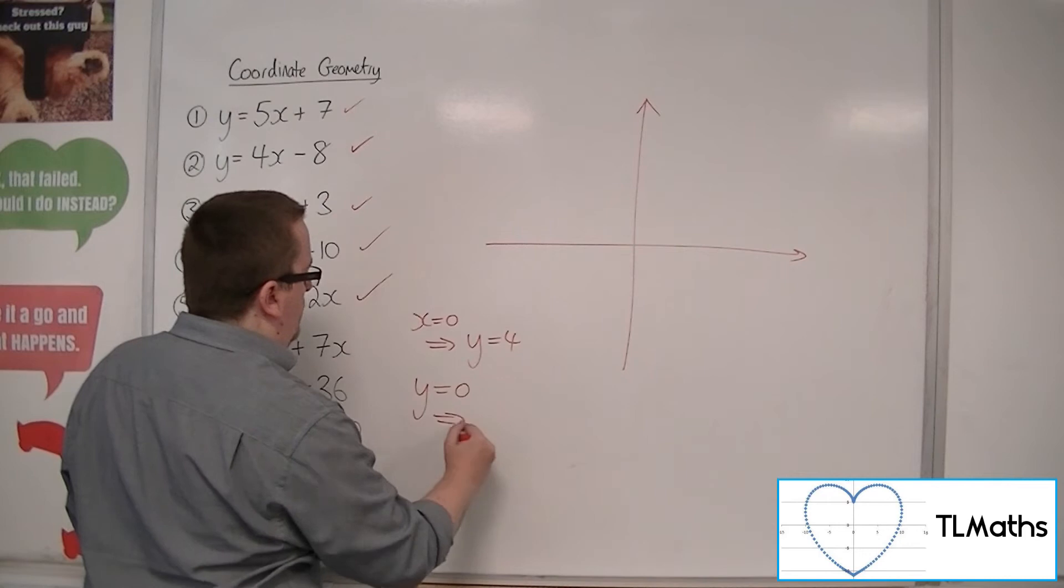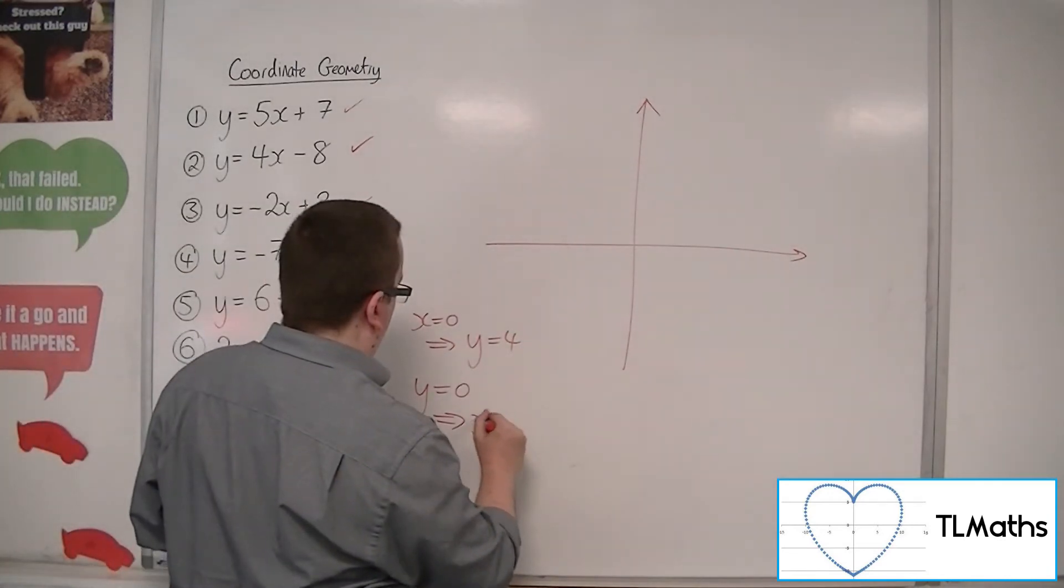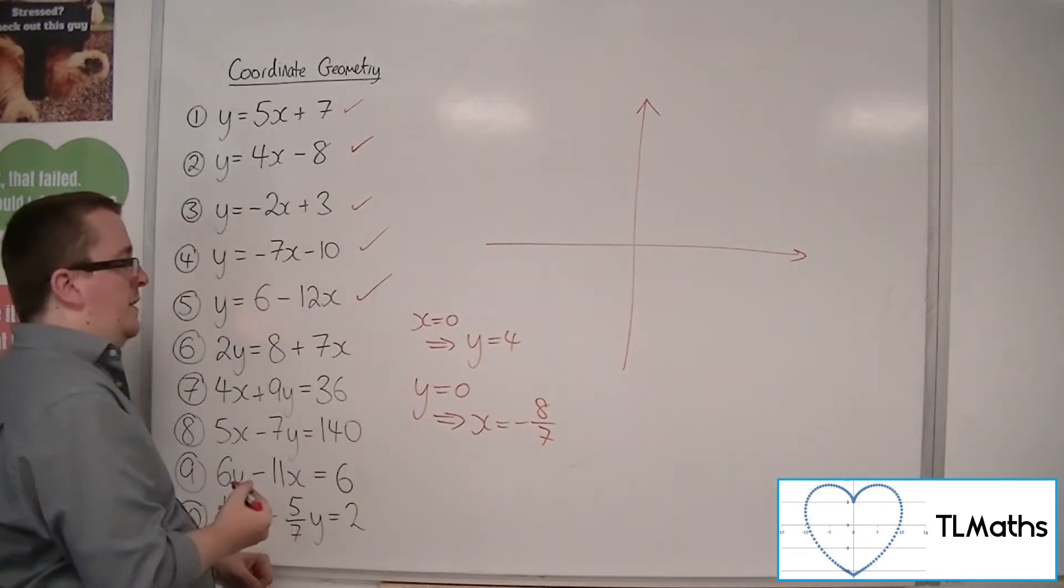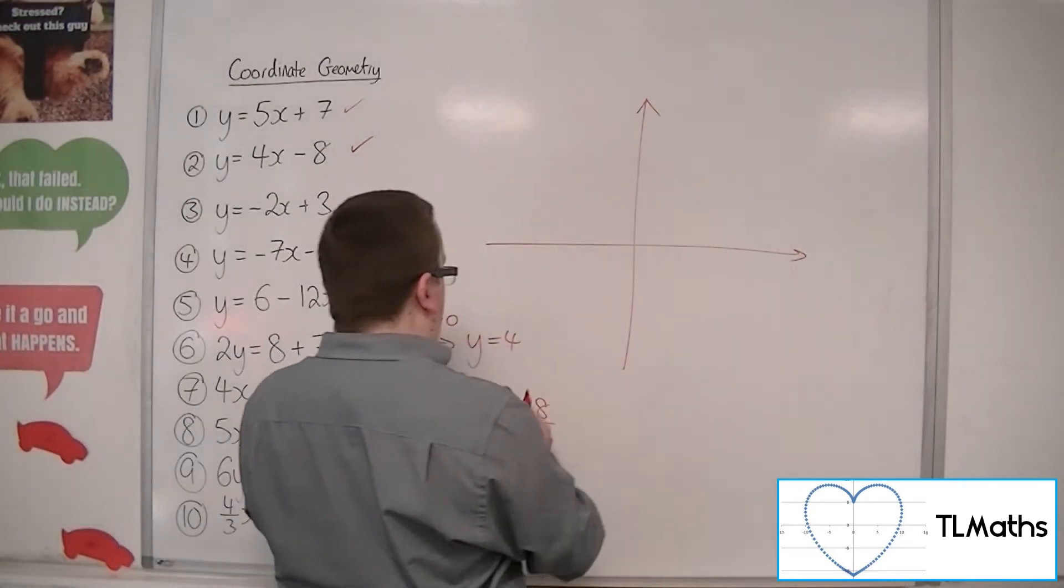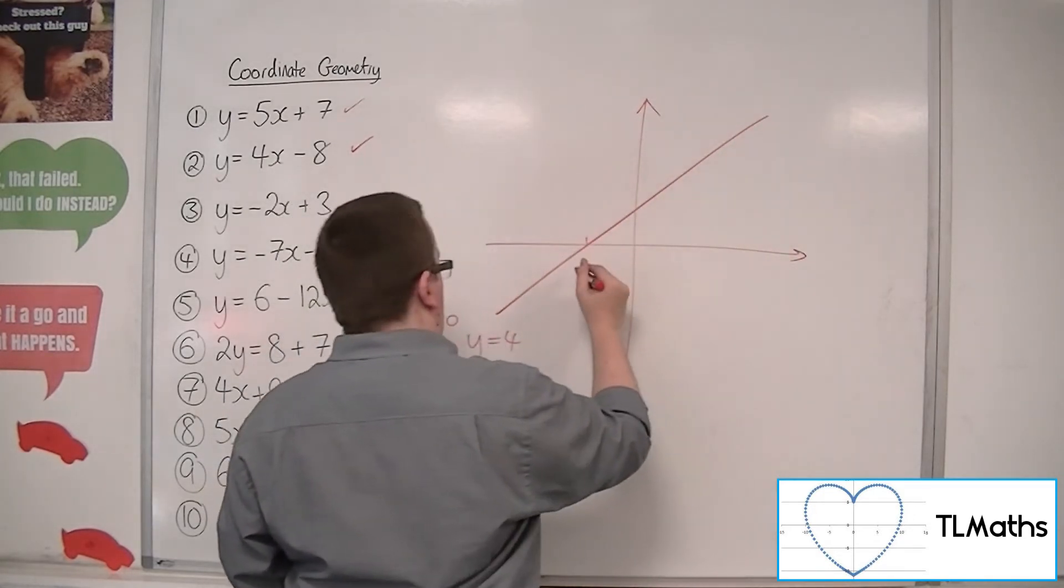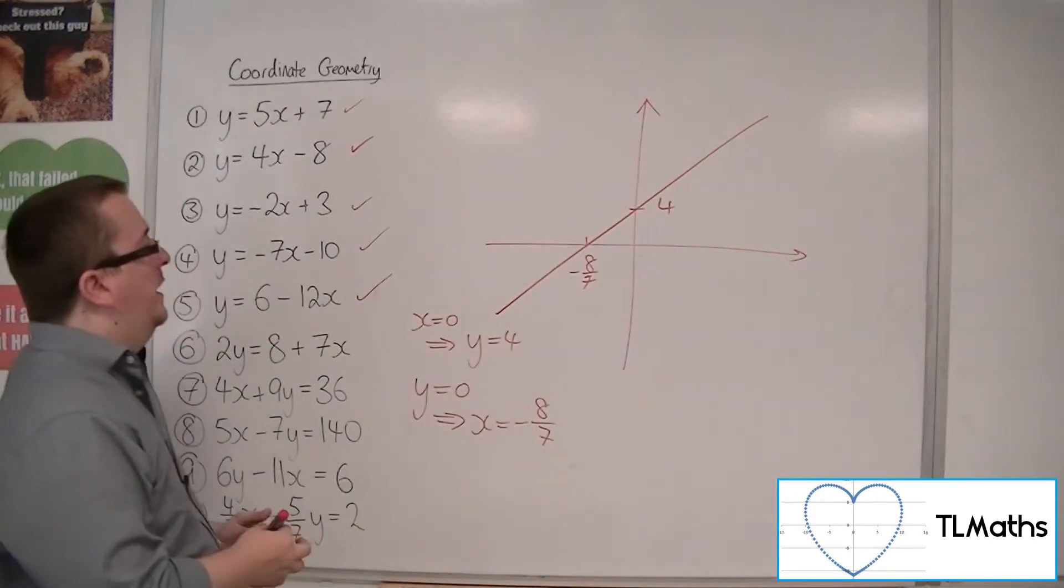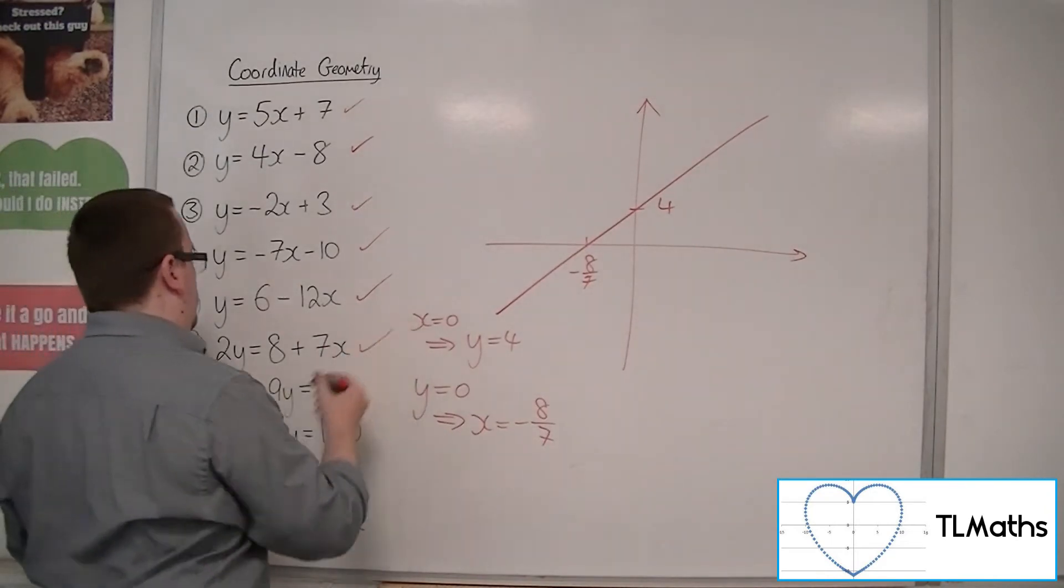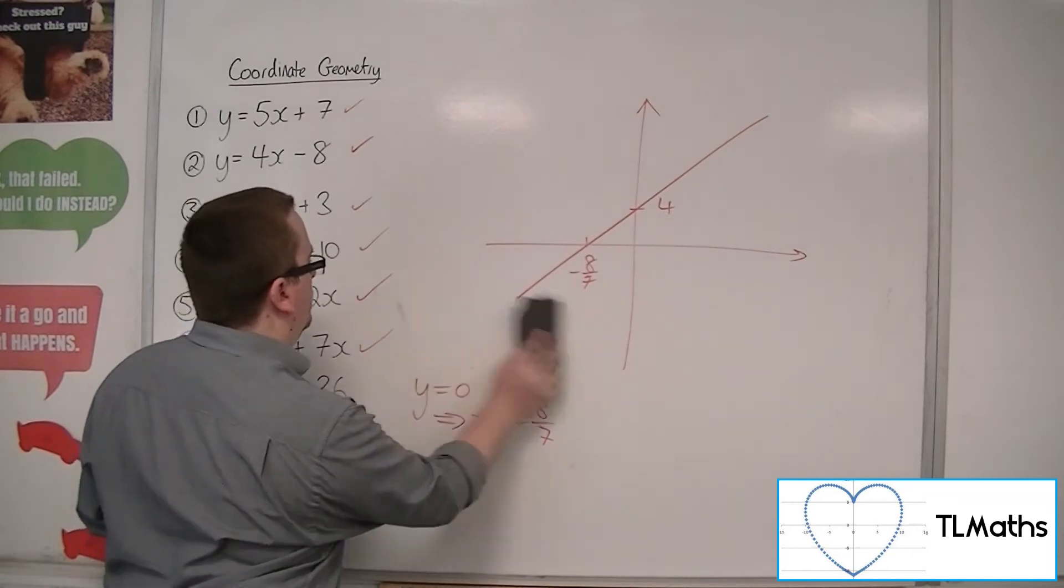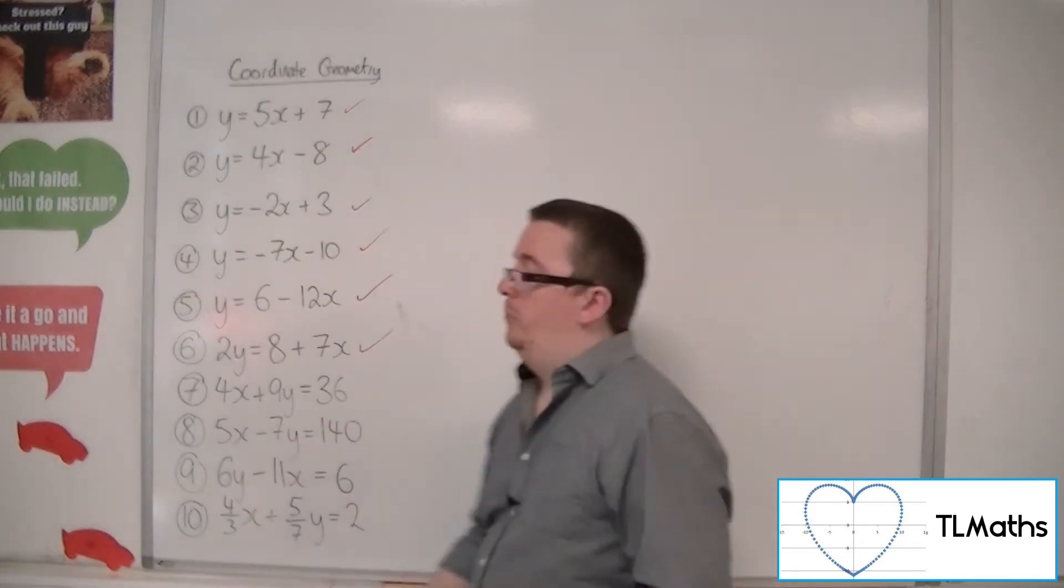When y is 0, then I'm going to get 8 plus 7x is 0. So if I take the 8 to the other side, minus 8 equals 7x, then divide through by 7, I get minus 8 7ths. Okay, so negative crossing through the x-axis and then positive y-axis. So something like this. There's your minus 8 7ths. There's your 4. Okay, and so that is number 6. Once again, don't worry too much about the scaling there. Okay, it just needs to contain the important points.